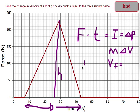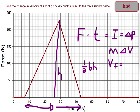So we get the impulse by doing the area. We get the area by doing one-half base times height. Once we get that impulse, we set it equal to the change in momentum and solve for change in velocity. That change in velocity is equal to the final velocity of the puck.